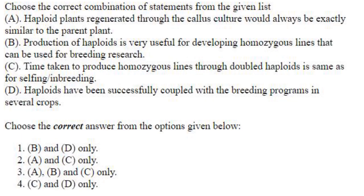Choose the correct combination of statements. Haploid plants regenerated through callus culture would always be exactly similar to the parent plant — this is not correct, because somatic mutation, epigenetic variation, and chromosomal aberrations can all occur. Production of haploids is very useful for developing homozygous lines for breeding research — B is correct. Time taken to produce homozygous lines through double haploids is the same as selfing and inbreeding — no, double haploids produce homozygous lines faster. Haploids have been successfully coupled with breeding programs in several crops — D is correct. So B and D only is the correct answer — option 1.